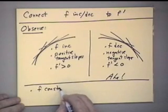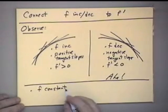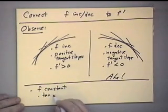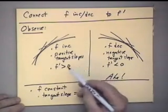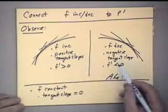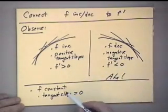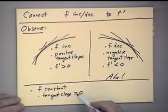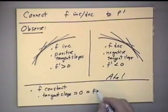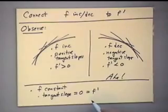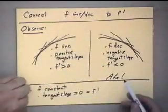For a decreasing function, all the tangent slopes are pointing downward to the right — these are all negative slopes. Since the derivative is a formula for tangent slopes, this says the derivative is negative. When f is constant, the tangent slope is equal to zero. If it's greater than zero it's increasing, if it's less than zero it's decreasing, and if it's constant somewhere the tangent slope will be zero.